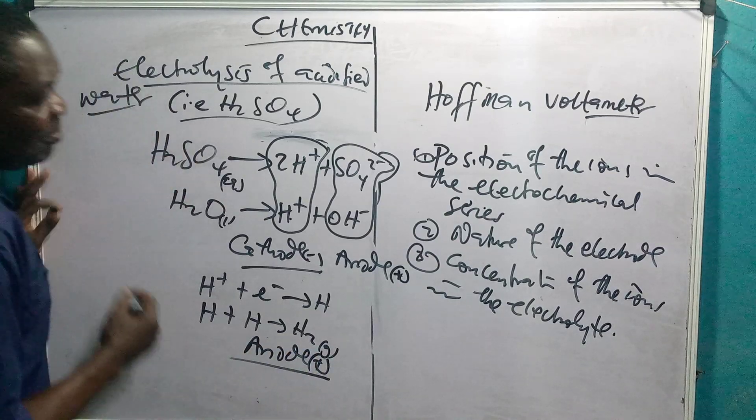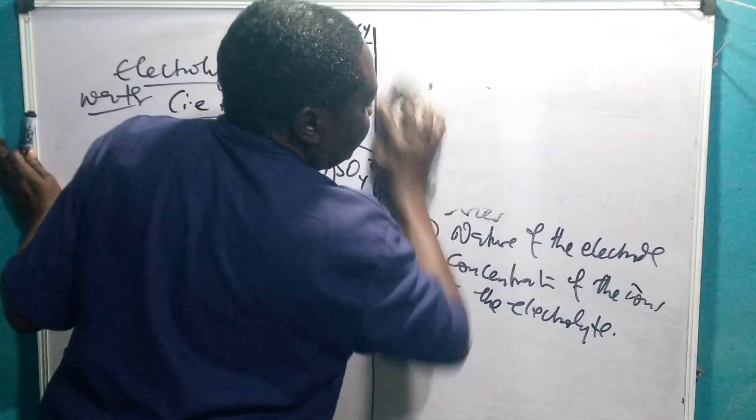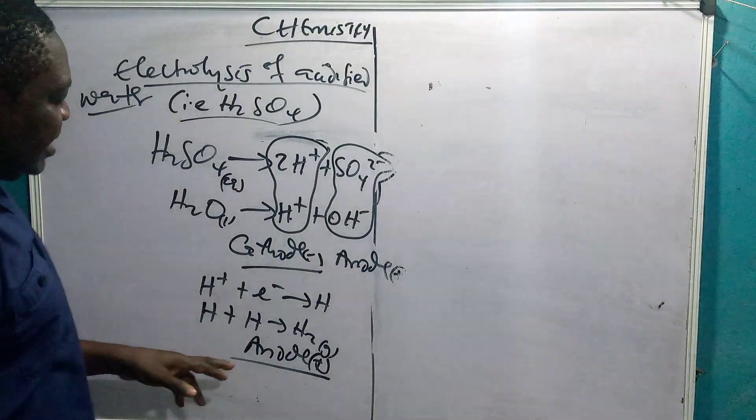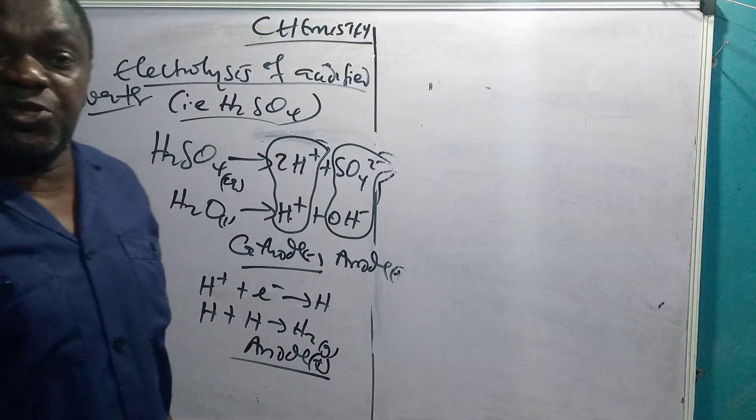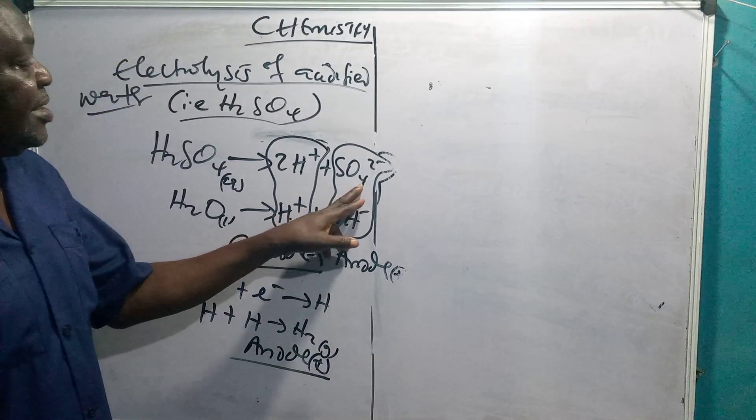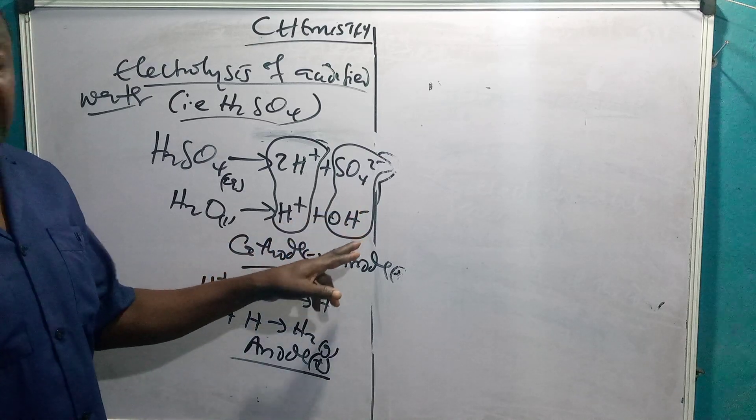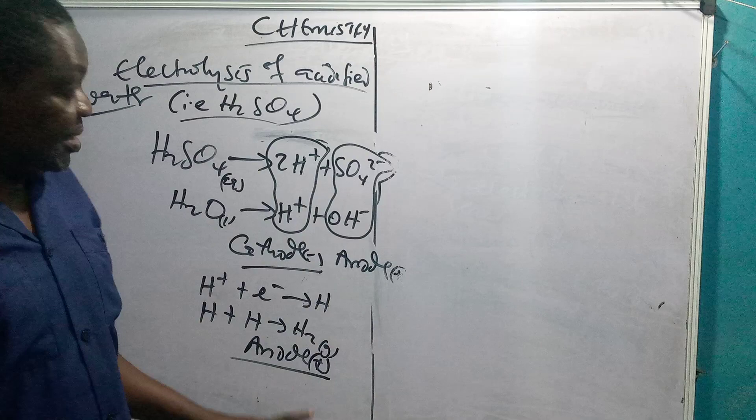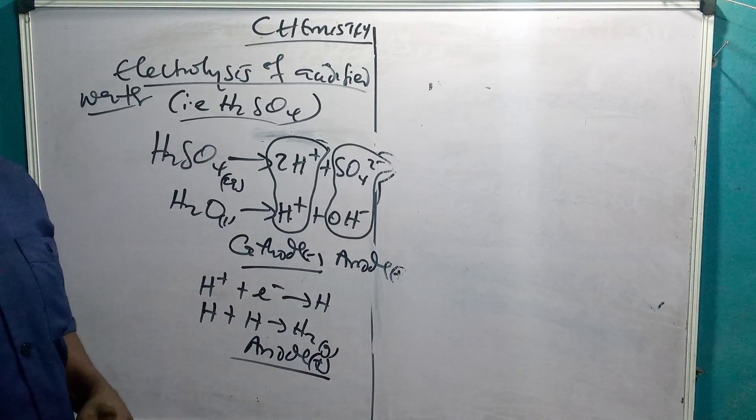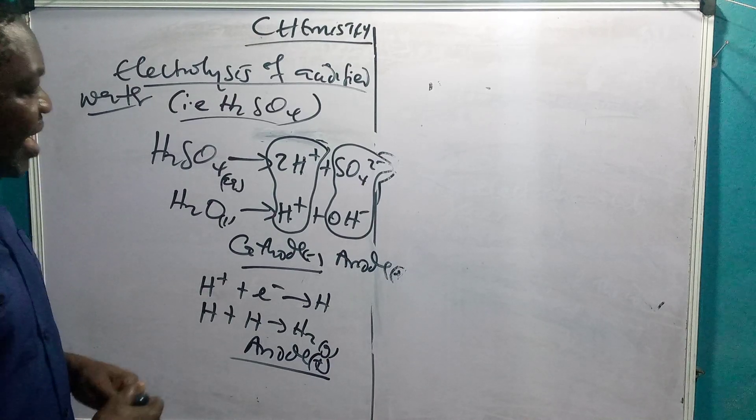Then at the anode. Remember we said the anode is positively charged. The anode is positively charged, meaning that it is deficient of electrons. It is not rich in electrons at all. So it needs to refill. Therefore, these negative ions, these radicals which have excess electrons, will now migrate to the anode so as to give out the excess electrons to it in order to become a neutral species so that it too can be discharged.